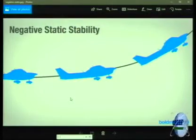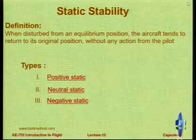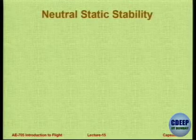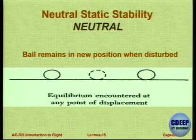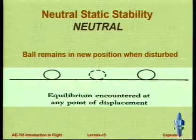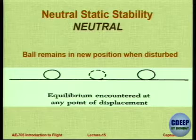Neutral stability is still stable because the aircraft is not going away, but it is neutral. The third type is negative static stability — if you disturb it, it goes further away on its own. We can illustrate these with a ball analogy: a ball on a flat table pushed to a position remains there — that is neutral. A ball in a bowl pushed to one side comes back — that is positive stability.